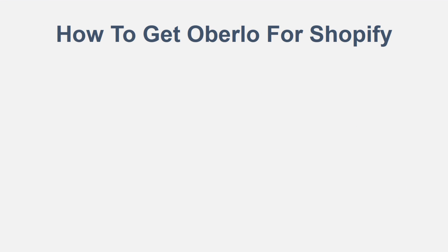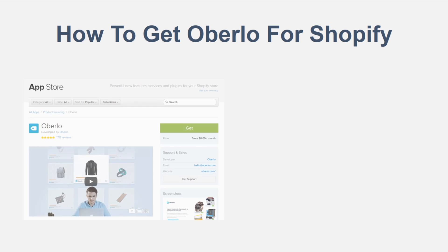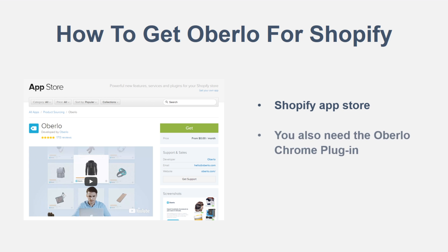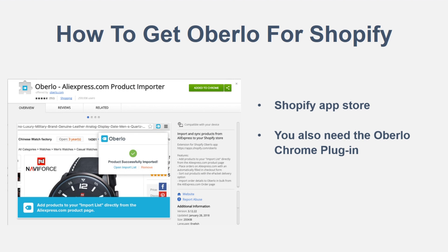So how exactly do we get this set up for Shopify? There are two things you need to download for the full Oberlo experience to automate your Shopify store. First, you need the Oberlo app from the Shopify app store. Second, you need the Oberlo Chrome plugin. You need to use the Google Chrome browser — not Internet Explorer or anything like that. Download Google Chrome if you don't have it already, then get the Oberlo Chrome plugin from the Chrome Web Store. You can Google 'Oberlo Chrome plugin' and it should pop right up. The app may also give you a prompt to install it. You're looking to download the 'Oberlo AliExpress.com product importer.' You need both the Shopify app and the Chrome plugin from Oberlo for it to work one hundred percent properly.